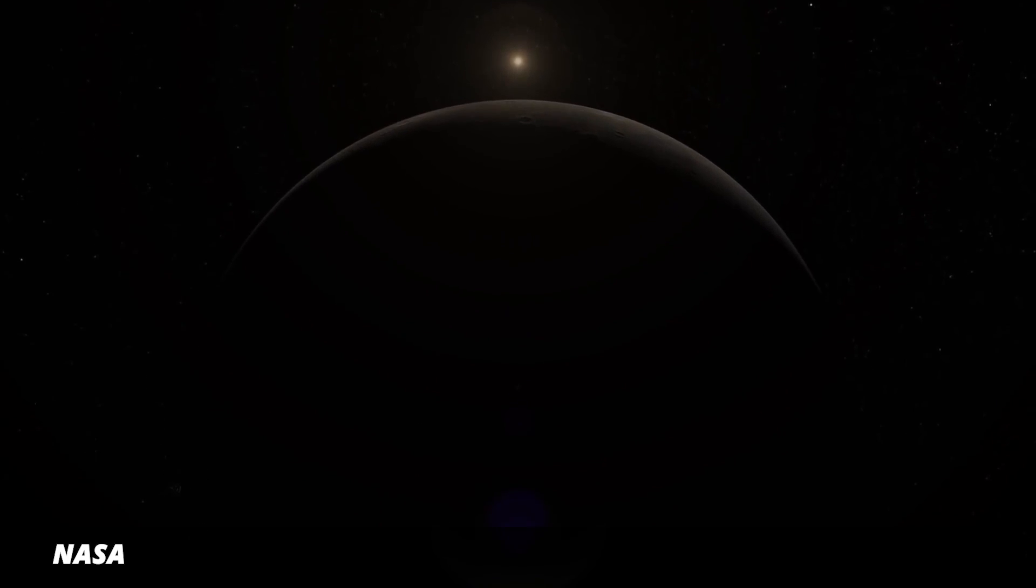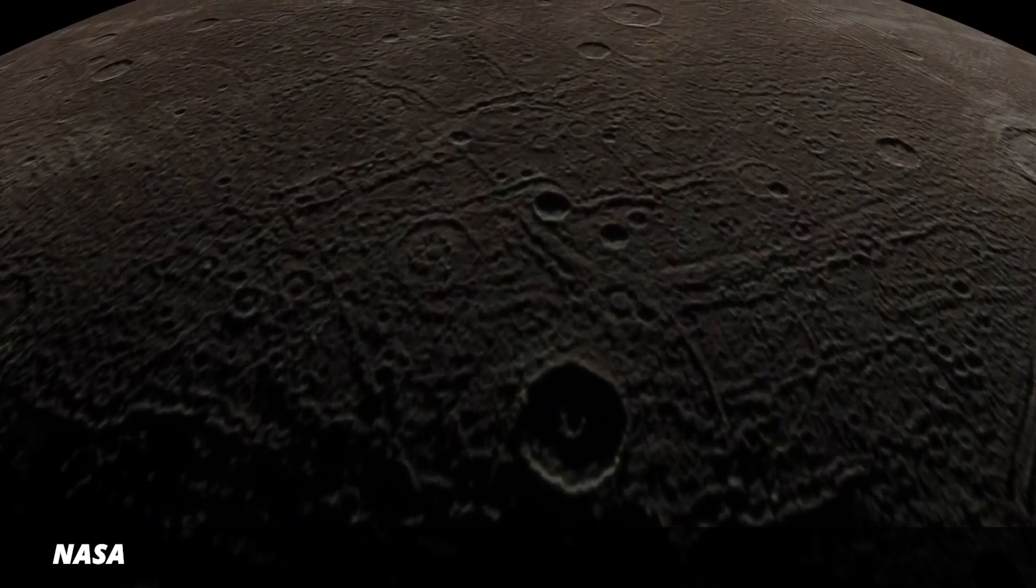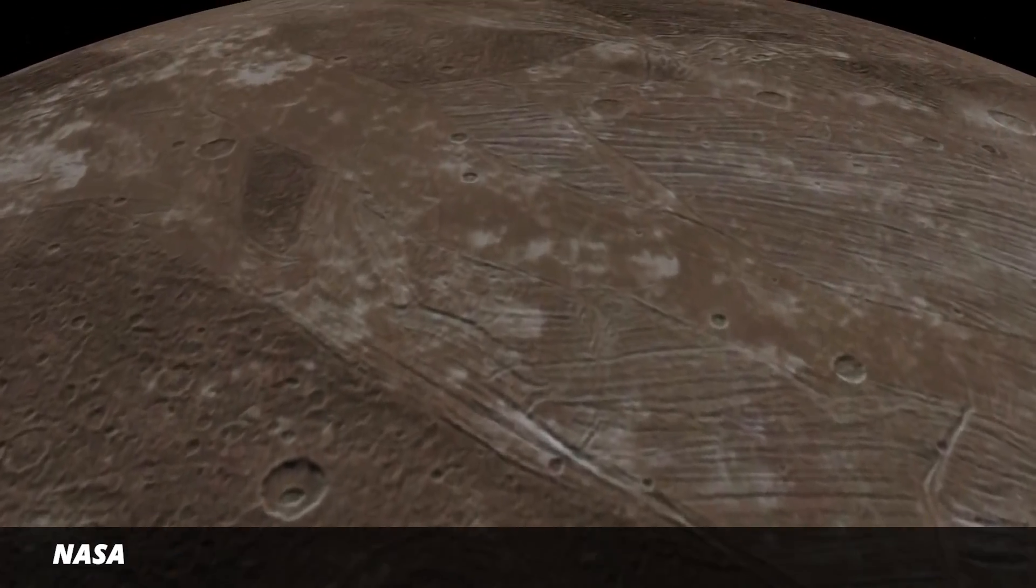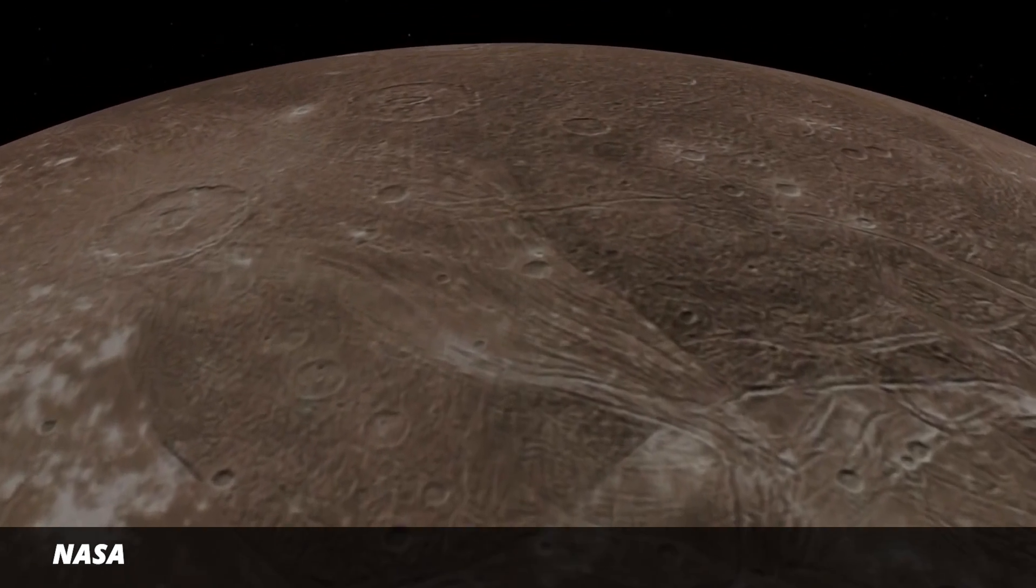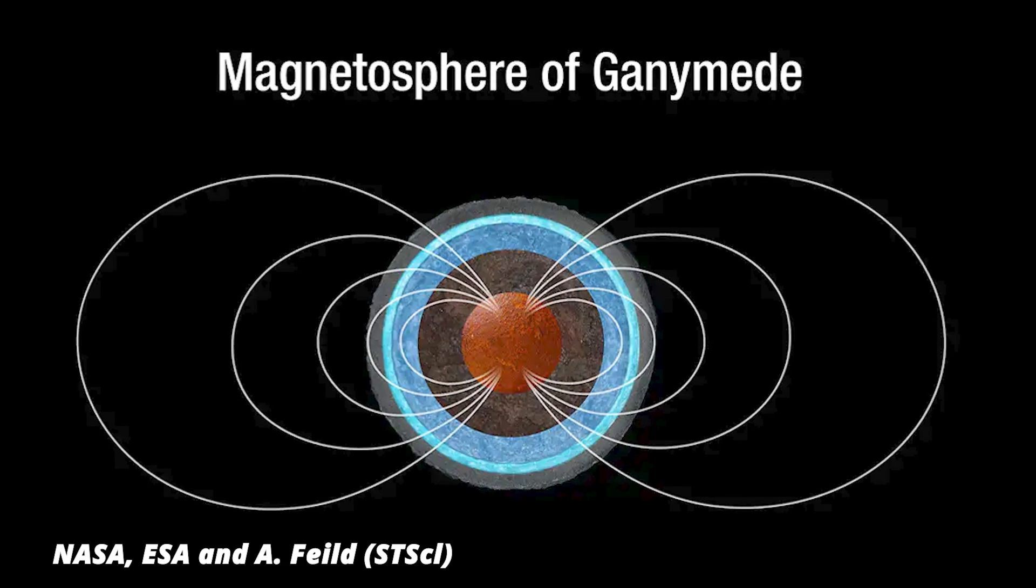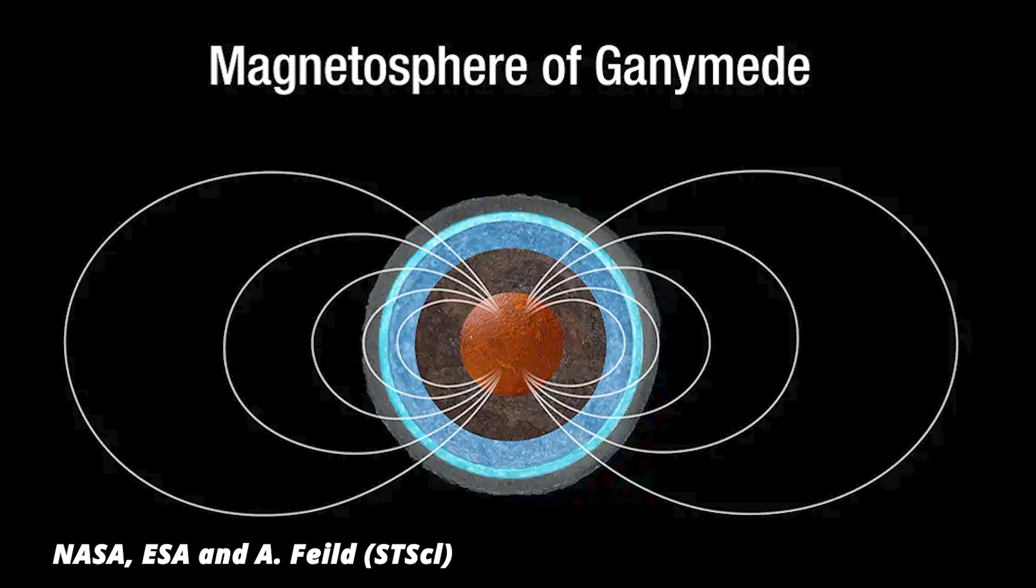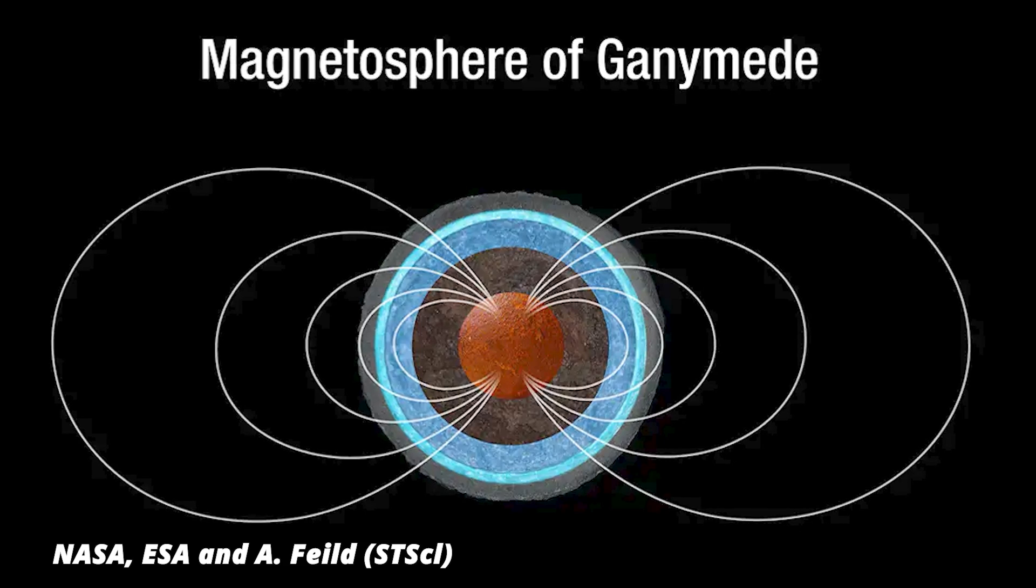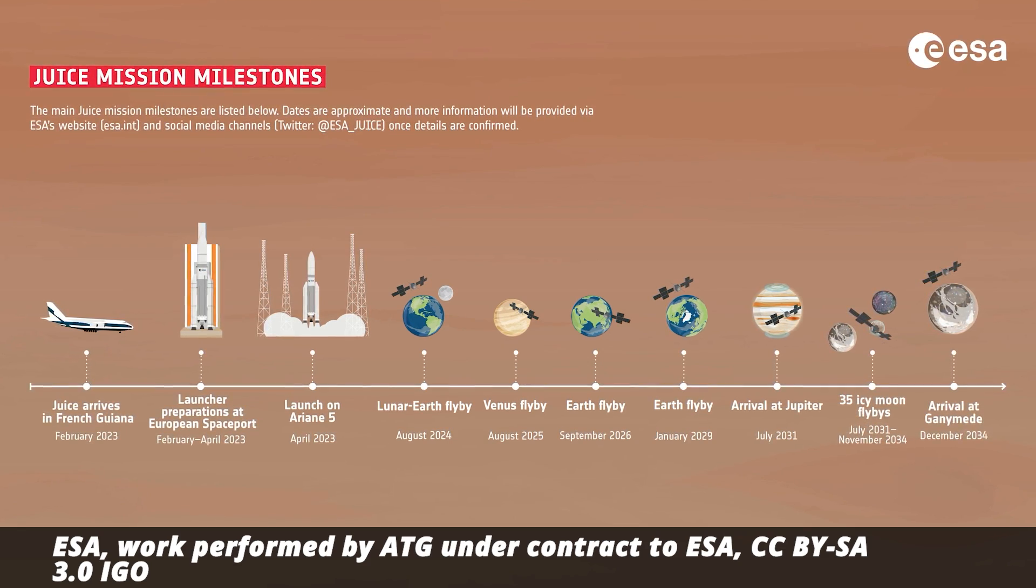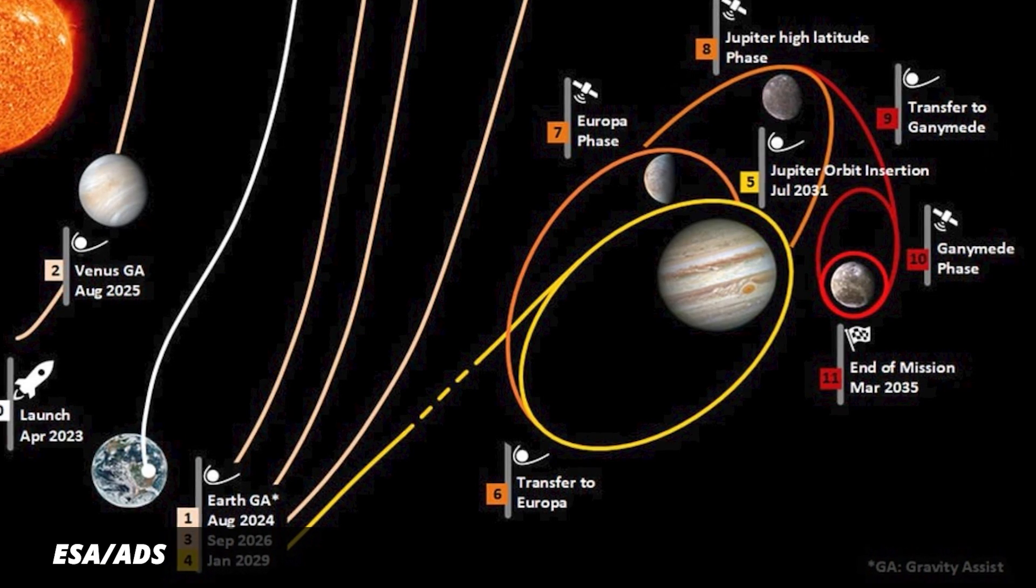They have icy crusts, seem to have magnetic fields, and are believed to have salty oceans underneath the ice that might host life. Ganymede is especially interesting. These are images taken by the Juno mission in 2021. It's not just the biggest moon in the solar system with a radius slightly less than half that of Earth, it also has a magnetic field, likely produced by a molten iron core. And while a magnetic field is not a prerequisite for life, it wouldn't hurt because it means the moon could have an atmosphere and protection from cosmic radiation. However, it'll take about eight years for JUICE to get to Jupiter, so we'll have to be patient for a little longer.